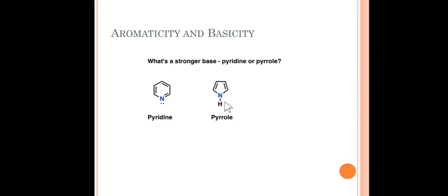In pyrrole, considering the six-electron system — that is the (4n+2) electron system — the nitrogen lone pair contributes two electrons and the two double bonds contribute four electrons, totaling six electrons. Therefore, the lone pair on nitrogen of pyrrole is part of aromaticity. If pyrrole donates this electron pair, it loses its aromaticity. Since aromaticity represents supreme stability, no compound will willingly lose it, so this lone pair is not available for donation.